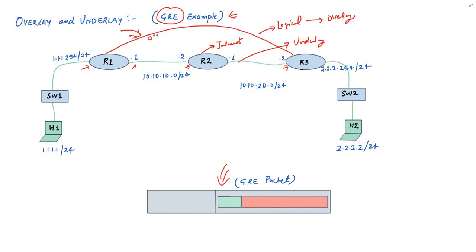On this tunnel, I am running OSPF protocol so that R1 knows about this network which is 2.2.2.0/24, and R3 knows about this network which is 1.1.1.0/24.